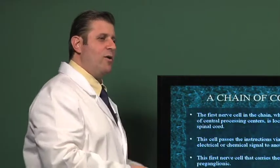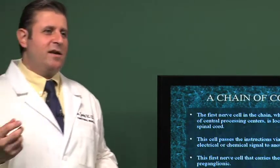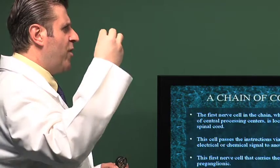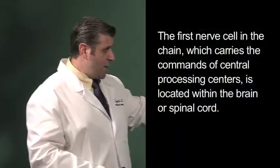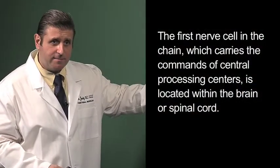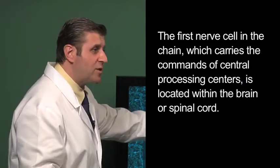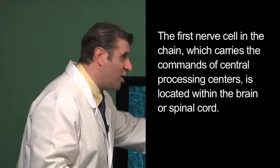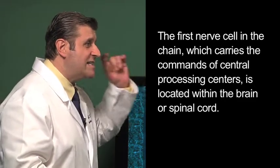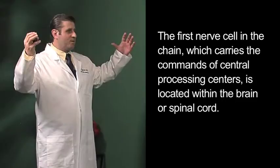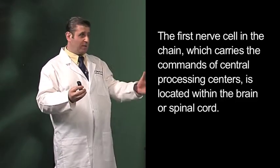A chain of command. We humans are majestically wired with a chain of command for this purpose. The first nerve cell in the chain, which carries the commands of central processing centers, is located within the brain. The first synapse, boom, I'm firing. It's in the brain or the spinal cord, which is an extension.